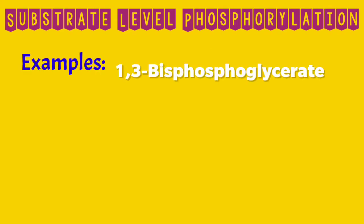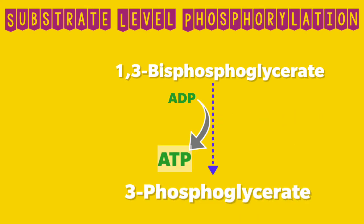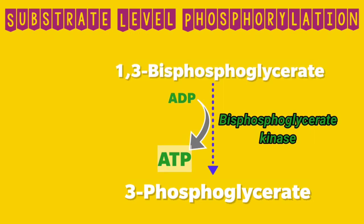Let us look at some examples. In the first example, 1,3-bisphosphoglycerate is converted into 3-phosphoglycerate. During this conversion, the high energy phosphate of 1,3-bisphosphoglycerate is transferred to ADP, converting it into ATP. This is how ATP is formed at the level of substrate by transferring a high energy phosphate from the high energy compound, without the help of the electron transport chain.